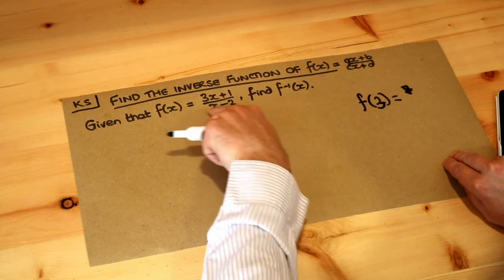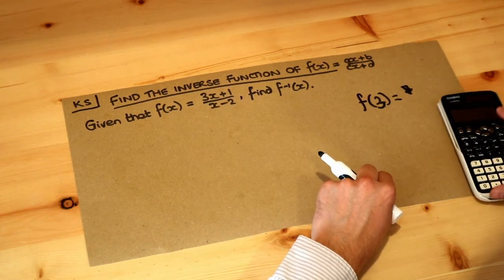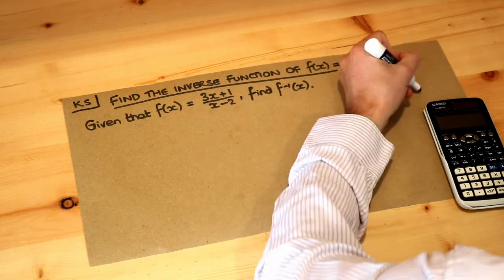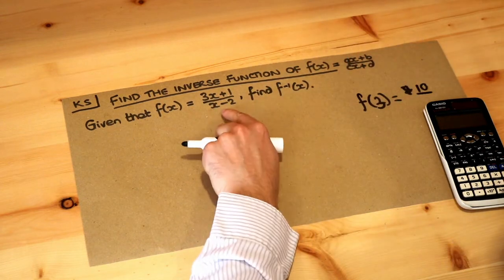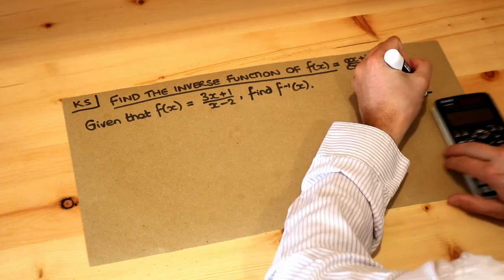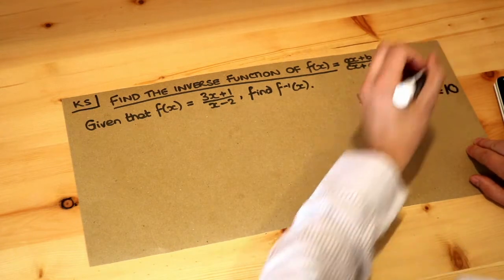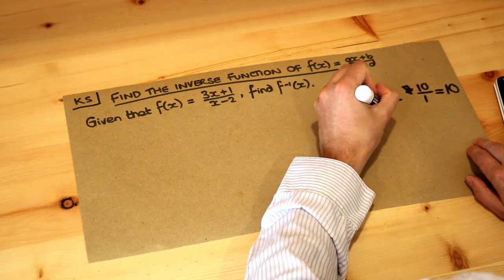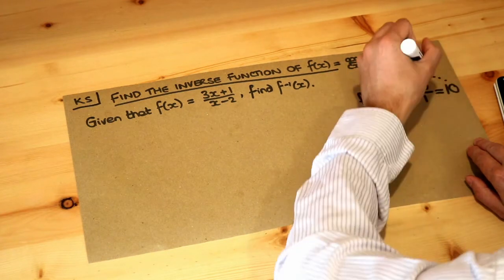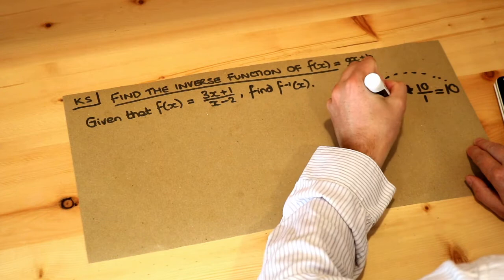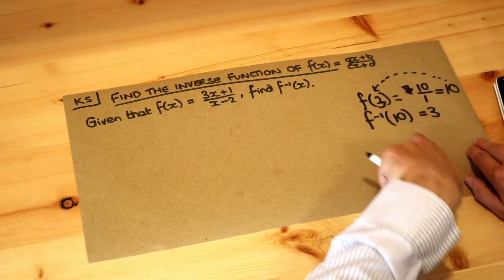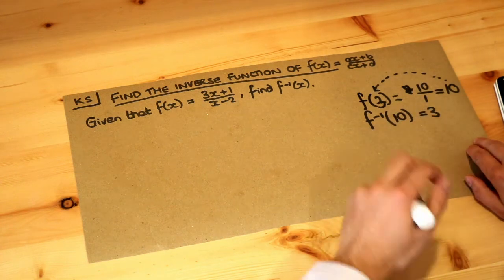3 times 3 would be 9 plus 1 is 10, so it's 10 over 3 minus 2 which is 1, so we get 10. So f of 3 is 10 and that means the inverse function does the opposite. If we made the input 10 it would get us back to the 3. So the original function gets us from 3 to the 10 and the inverse function gets us back from the 10 to the 3.